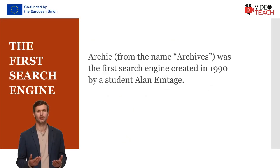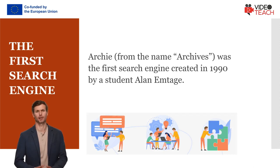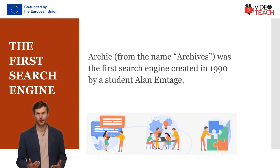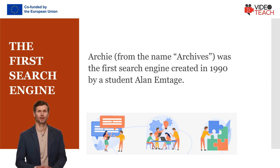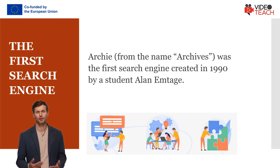What was the first search engine? Archie, from the name Archives, was the first search engine, created in 1990 by student Alan Emtage. Although there were some indexing programs before, like X.500 or Whois, Archie was the first real search engine capable of finding specific files on the internet. Archie worked pretty simply — it looked at the sites available on the internet and indexed them as downloadable files. However, it could not index the content of the sites, and therefore the result pages had the form of a simple list.